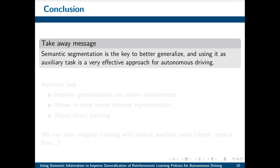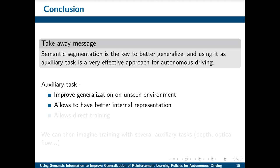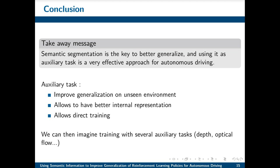To conclude, we demonstrated that semantic segmentation is key to better generalization, and using it as an auxiliary task is the most effective approach we tested for autonomous driving. A well-chosen auxiliary task is the best way to improve generalization capabilities in reinforcement learning for autonomous driving. One reason is that the agent develops a better internal representation of the environment — for instance, it can better map negative rewards with semantic information. Auxiliary tasks also allow a single end-to-end training with one optimization and no intermediate steps. For future work, we can imagine using different auxiliary tasks like depth prediction or optical flow to add temporality, and potentially train all auxiliary tasks simultaneously. Thank you for your attention.